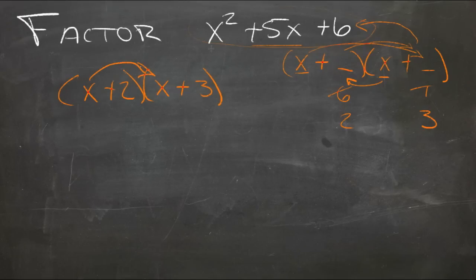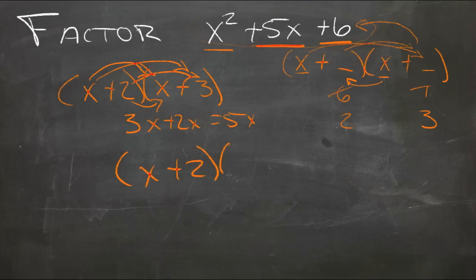x times x is x squared. x times 3 is 3x, and 2 times x is 2x, so that's 5x. And then 2 times 3 is 6. So we have our expression x plus 2 times x plus 3, and that's our answer.